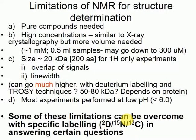So NMR — great technique, has its limitations, like all good techniques. If you want to look at structures you need protons, then you need pure compounds. If you want to look at phosphorus and you've only got one compound with phosphorus in it, then you don't really care, right? You need high concentrations. You can get away with a couple of hundred micromolar — the higher you've got, the better.